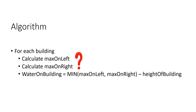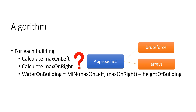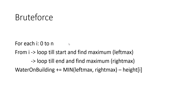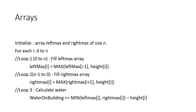There are two approaches: brute force and using arrays. For the brute force approach, for each bar you would need to find the maximum on the left by looping till the start, maximum on the right by looping till the end, and then apply the formula. This approach has a time complexity of O(n²) while the space complexity is O(1). To reduce the time complexity, we can use extra space.